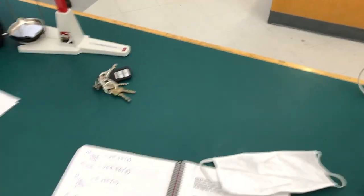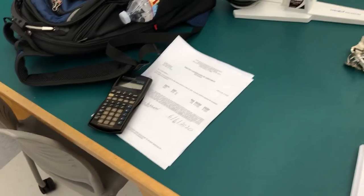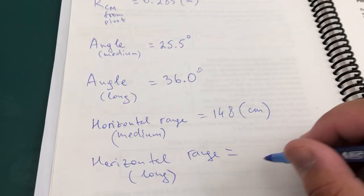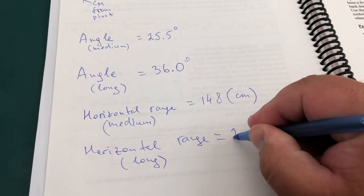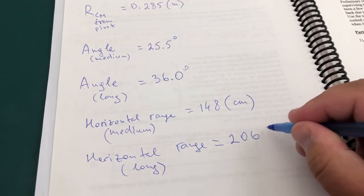Let's do the in-between results and find the pen. 205, 206. So for the horizontal range long setting, we're going to write down 206 centimeters.